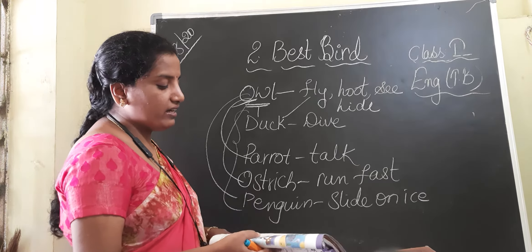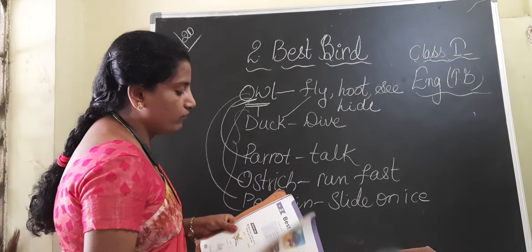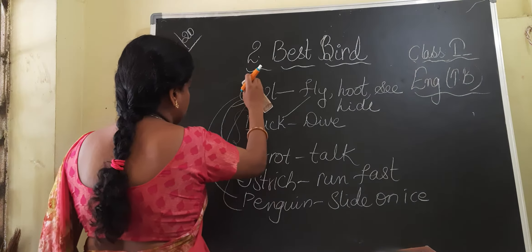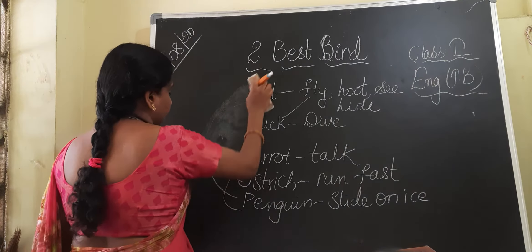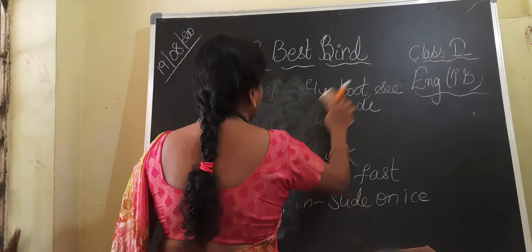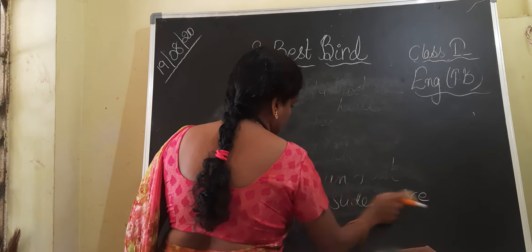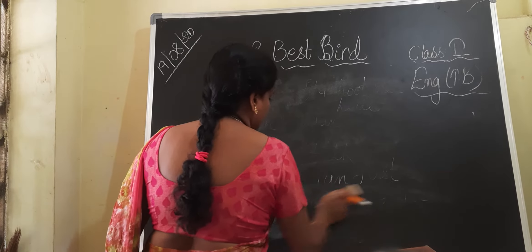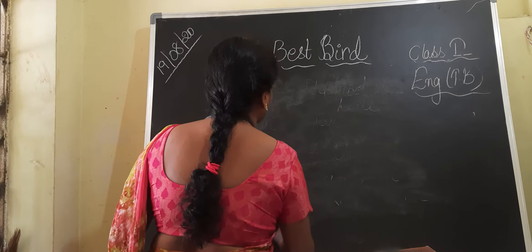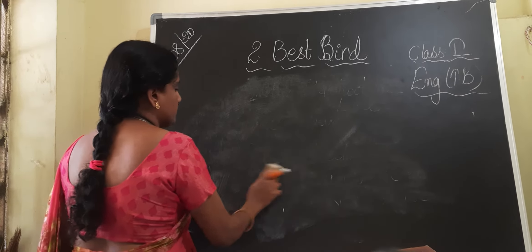Now we will read a few hard words related to the lesson — we will revise them. If you revise the hard words, children, only then you can read the lesson well. Now, if you see the lesson, children, let's go through the vocabulary.